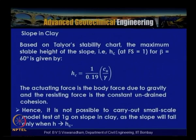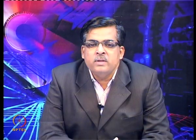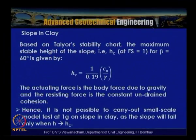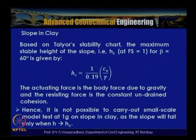If you have a model slope of height h_m, the ratio h_c to h_m will be very high, ensuring a very high factor of safety. The actuating force is the body force due to gravity and the resisting force is the constant undrained cohesion. It is not possible to carry out small-scale model tests at 1g on a slope in clay, as the slope will fail only when h reaches h_c.